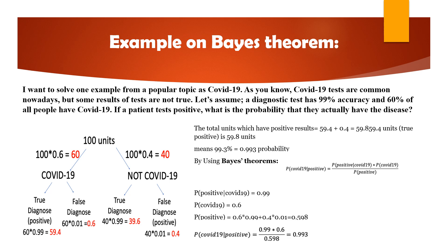The total units which have a positive result is 59.8 units. By using Bayes theorem: P(COVID-19 | positive) = P(positive | COVID-19) × P(COVID-19) / P(positive). P(positive | COVID-19) = 0.99, P(COVID-19) = 0.6. Then P(positive) = (0.6 × 0.99) + (0.4 × 0.01) = 0.598.